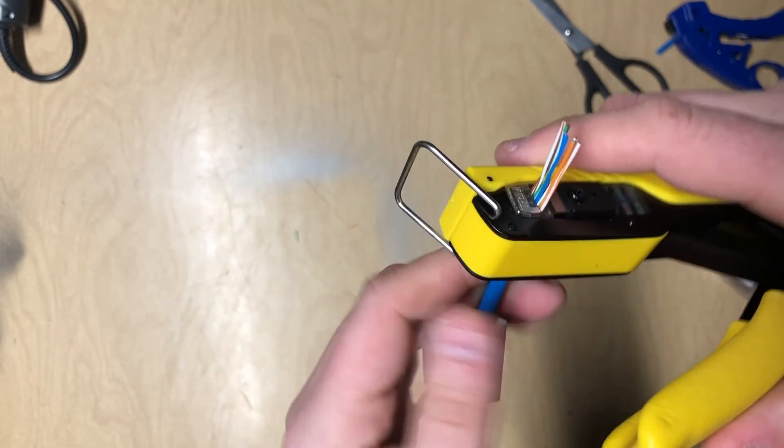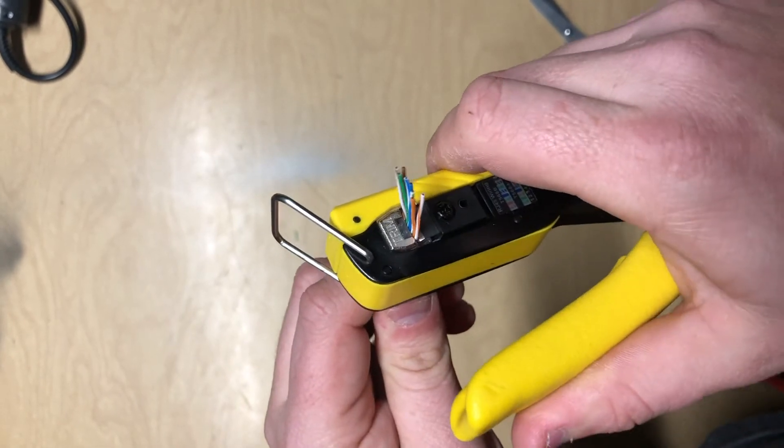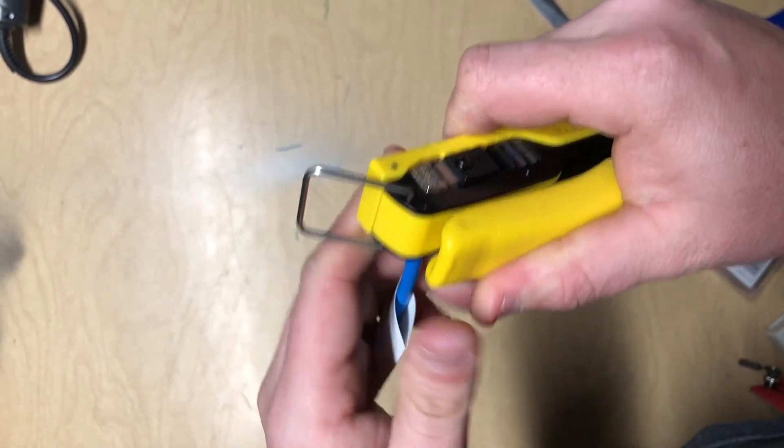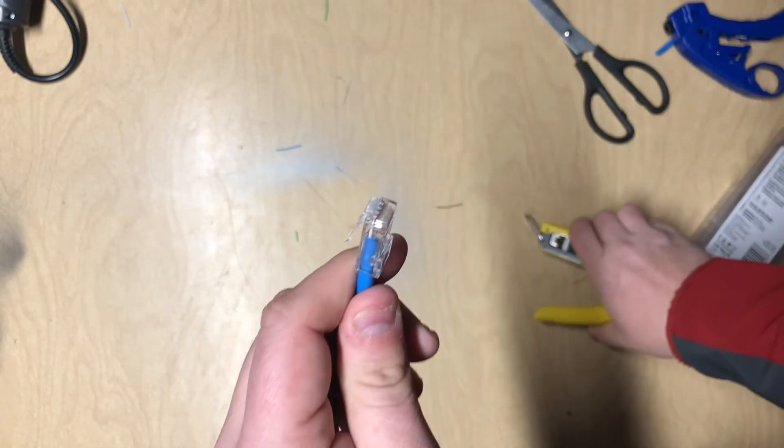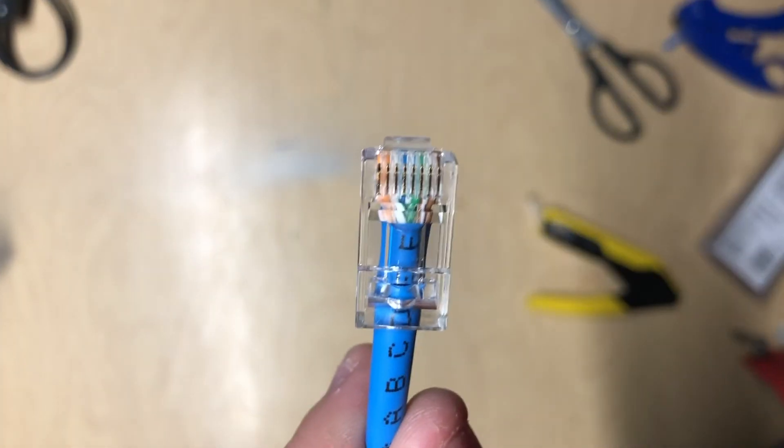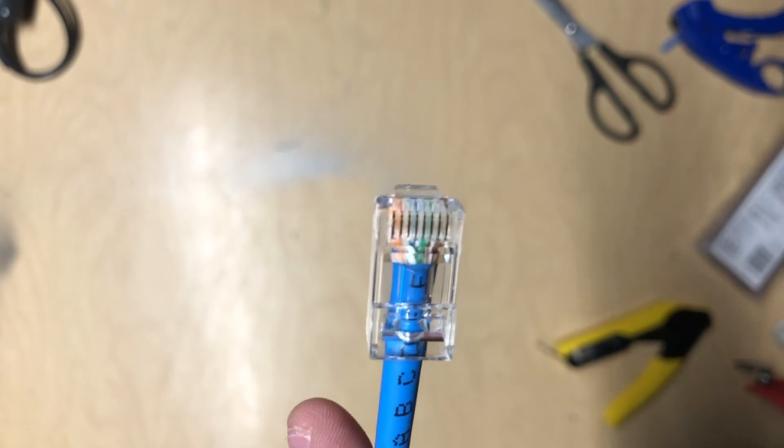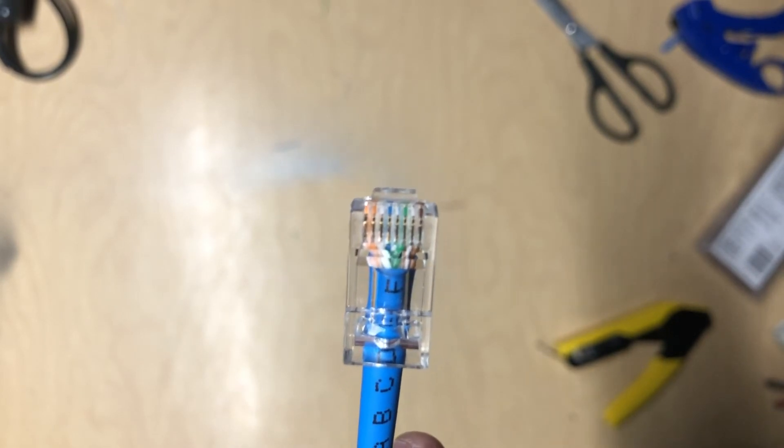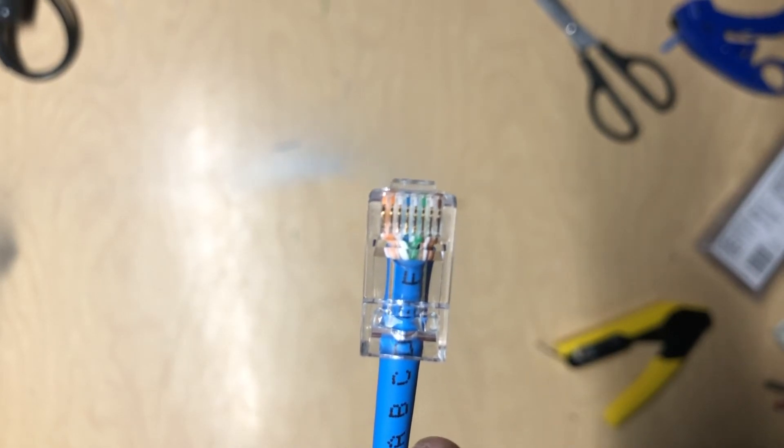Watch how easy—you're just pressing down. It cuts all of them and crimps it at the same time. You can see where it crimped it in right there. Perfect, that's what you want. You want to see that crimped into that.